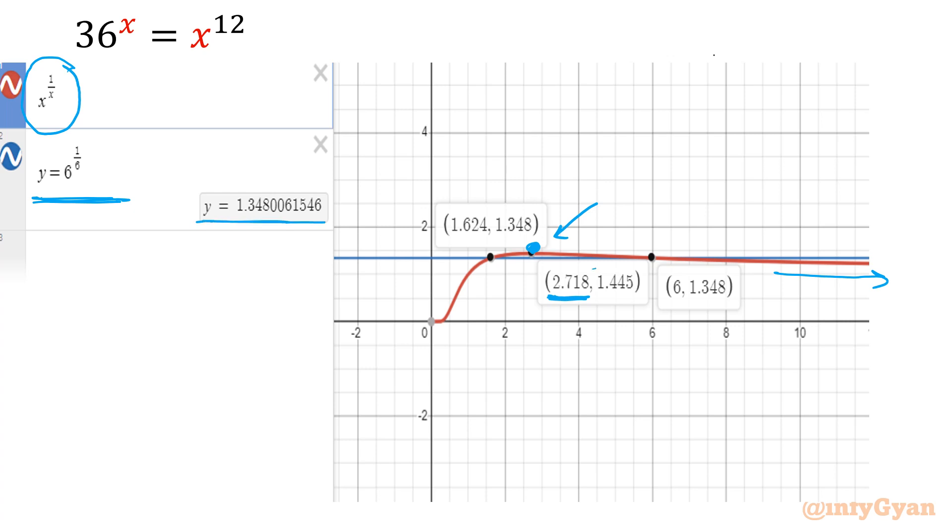And y equal to 6 power 1 over 6, it is constant 1.34. So now you can see, this value is greater. One graph is attaining maxima and then it is coming dipping down like that. And this point is x equal to 2.718 and its y value is 1.44. Now your right hand side is 1.34. So I will draw one parallel line at y equal to 1.34. Now you can see it will intersect the graph at two points.